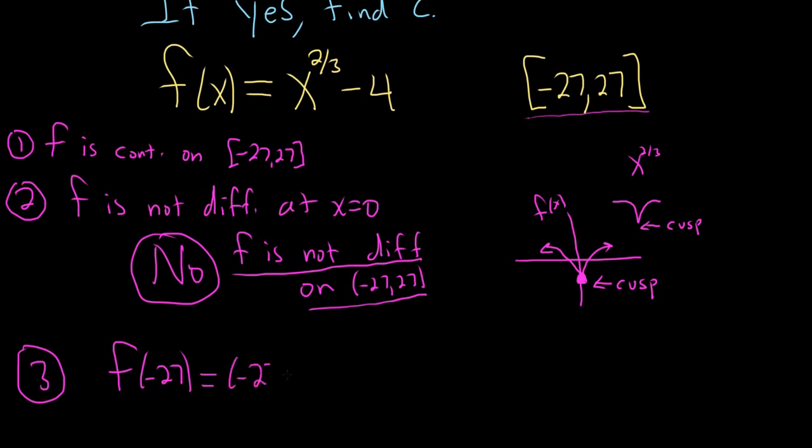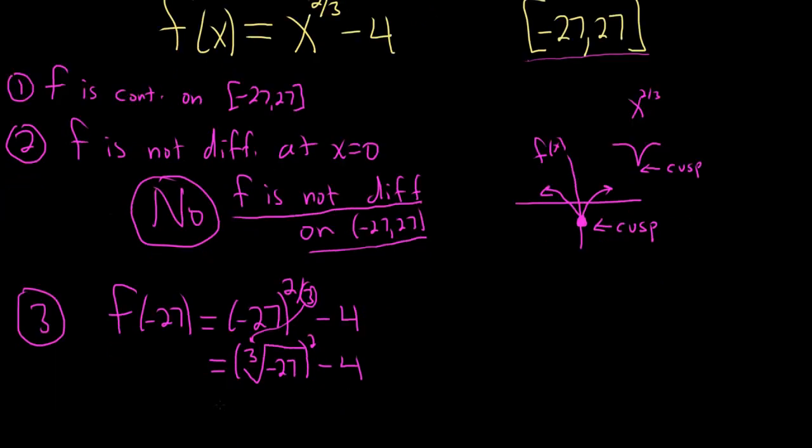Negative 27 to the 2 thirds minus 4. Let's work this out by hand. This is equal to - you put the 3 in the pocket, the negative 27 goes here, and the 2 goes in the outside. That always works. You just always take this 3 and put it in the little pocket, and then minus 4. Or you can use the calculator. The cube root of negative 27 is negative 3, squared minus 4. So there we have 9 minus 4, so we get 5.